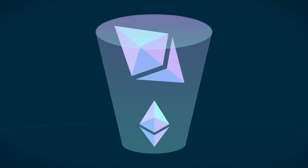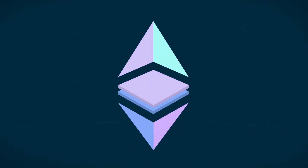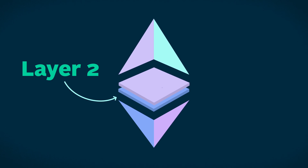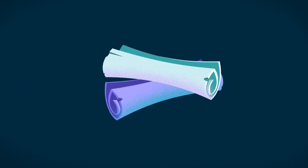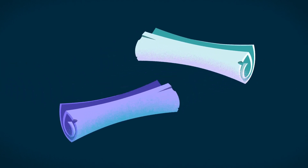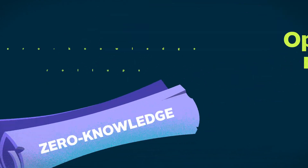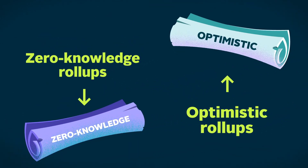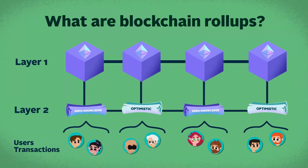It's no secret that Ethereum has scalability issues, and that's why layer 2 solutions like rollups have emerged. Today we'll explore the two rollup scaling solutions, optimistic and zero-knowledge rollups. But before we get into their differences, what are blockchain rollups in the first place?